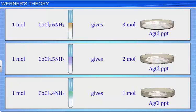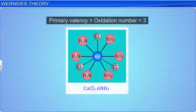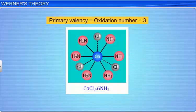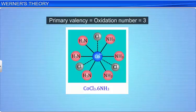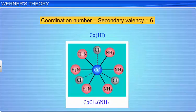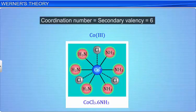Werner deduced that in CoCl3·6NH3, the primary valency or oxidation state of +3 is satisfied by 3 chloride ions. The coordination number of the cobalt 3+ ion is 6. As there are 6 ammonia molecules in the compound, they alone satisfy the 6 secondary valencies of cobalt. The primary valencies are represented by dotted lines and the secondary valencies by thick lines.